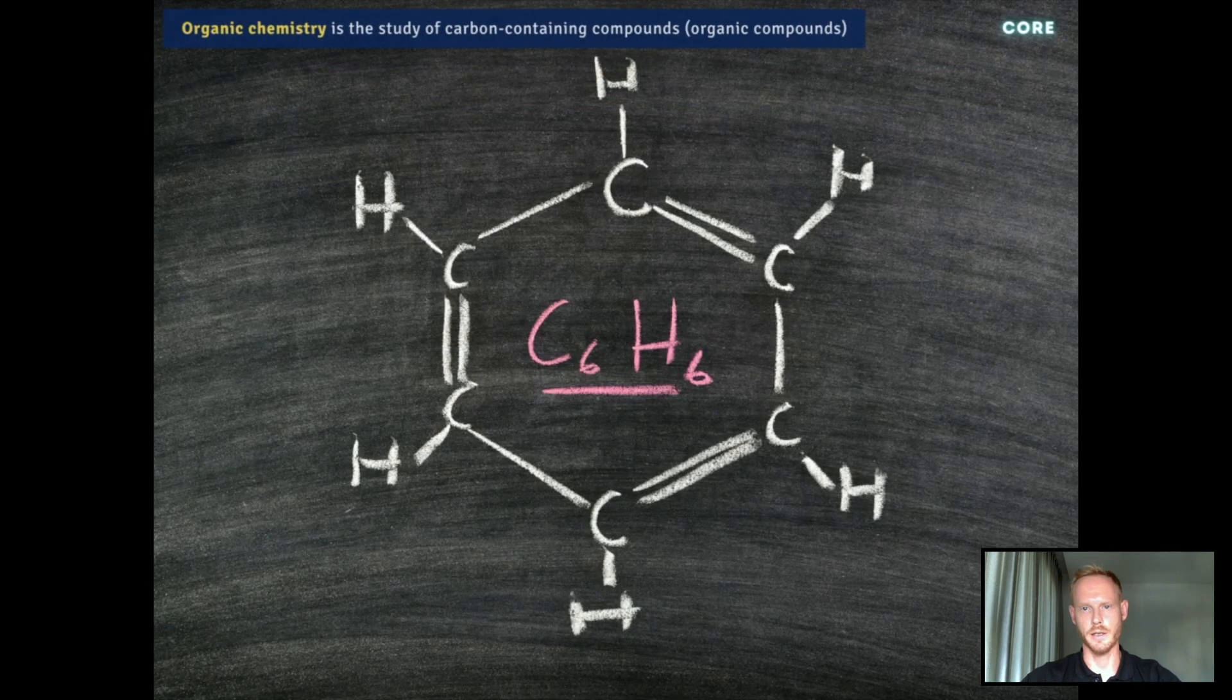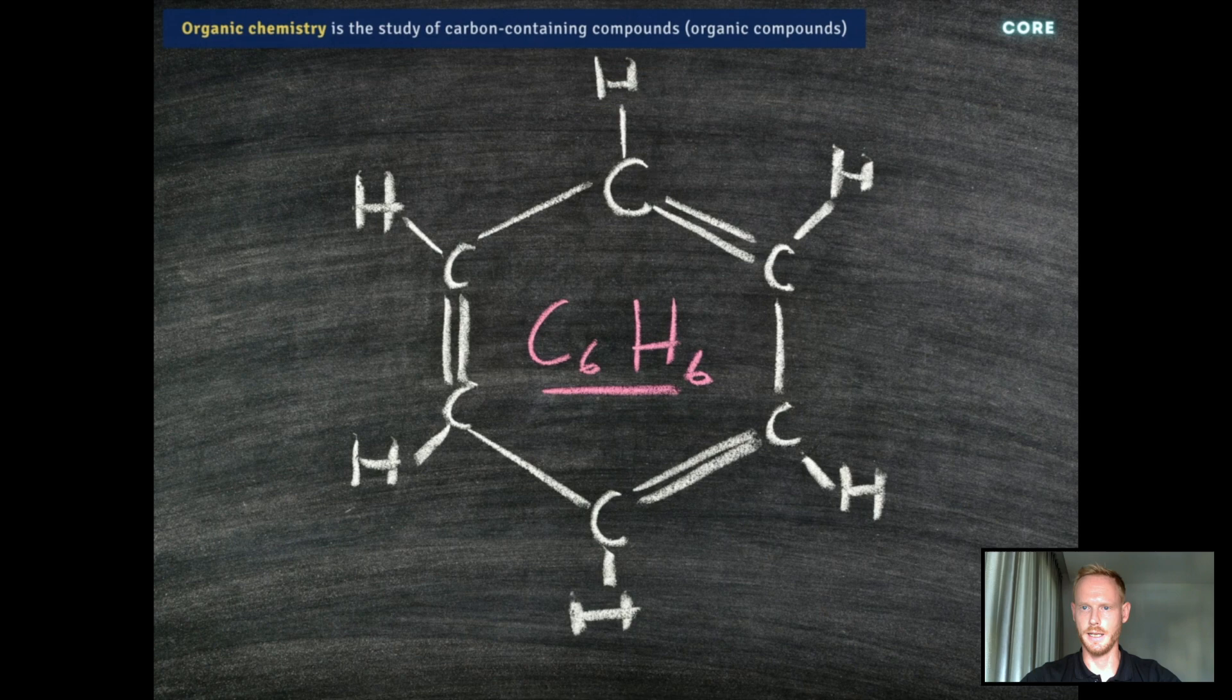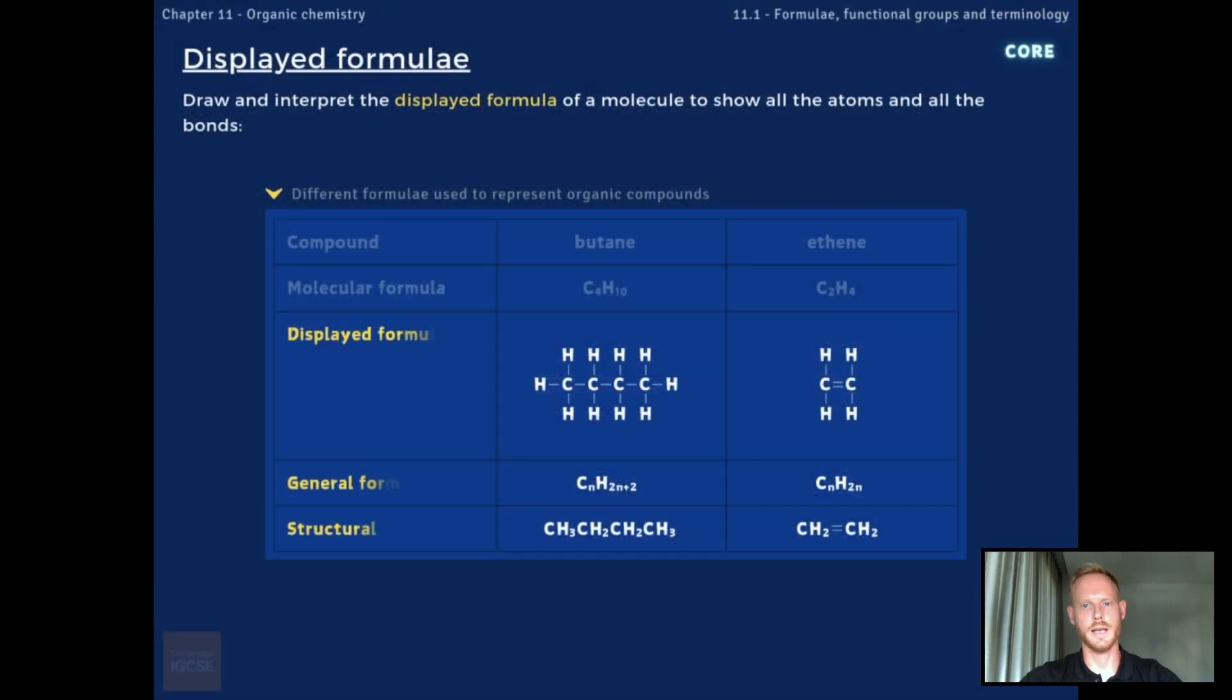Organic chemistry is the study of the structure, properties and reactions of organic compounds, which are the chemical compounds that contain carbon. Organic compounds can be represented by different types of formulae, including displayed formulae, general formulae and structural formulae.